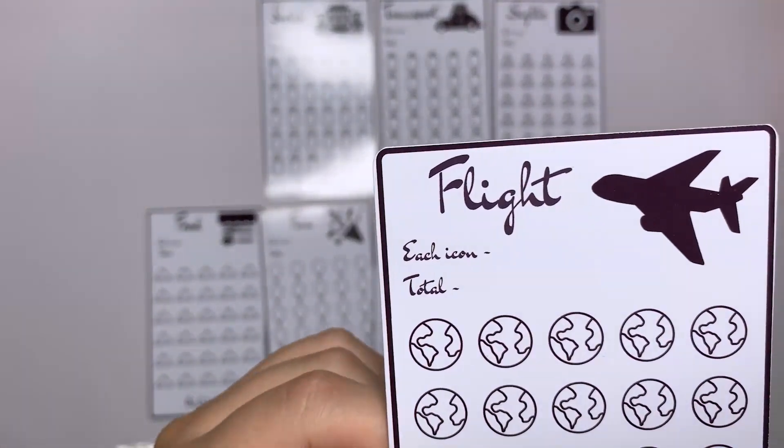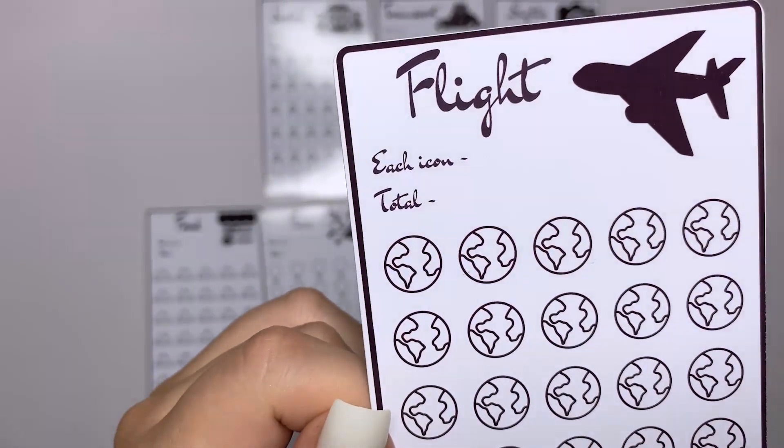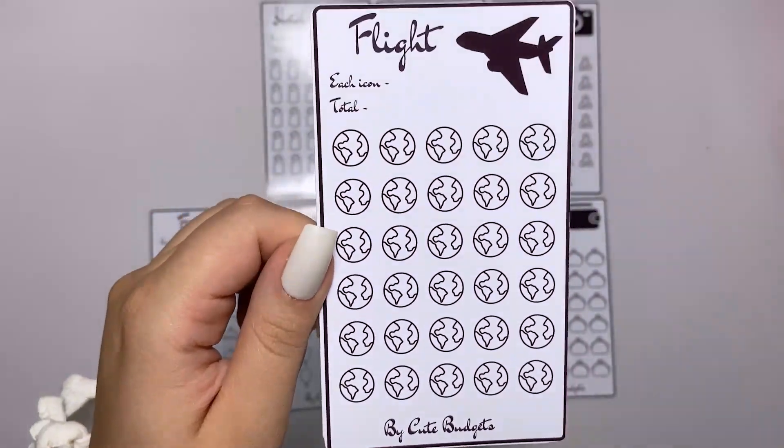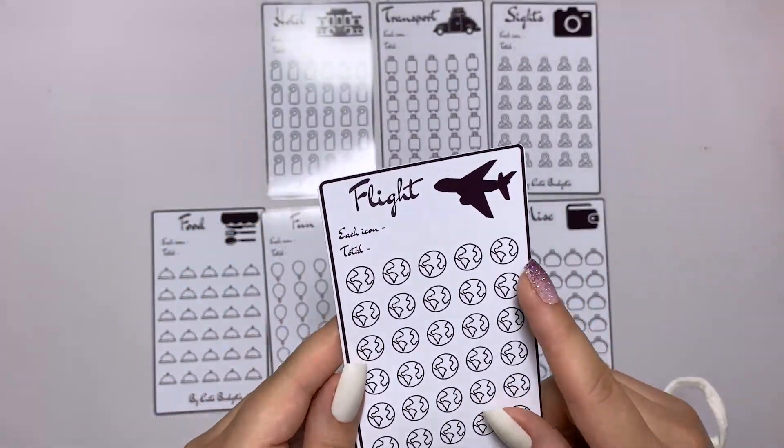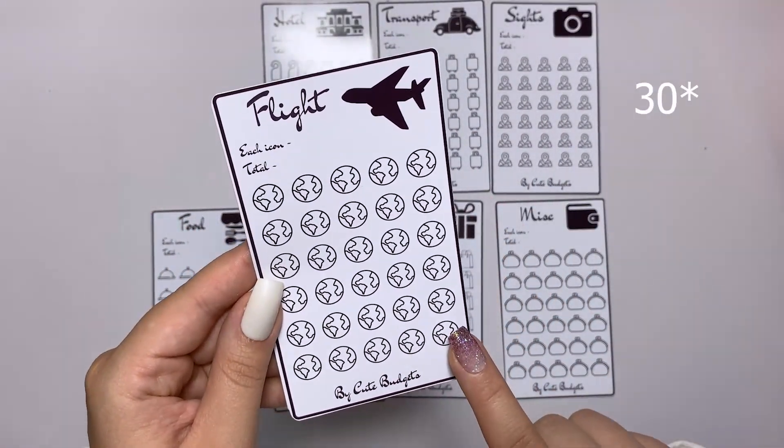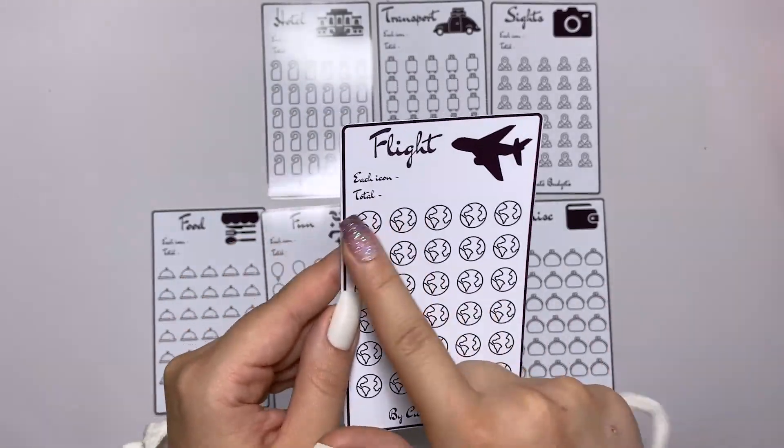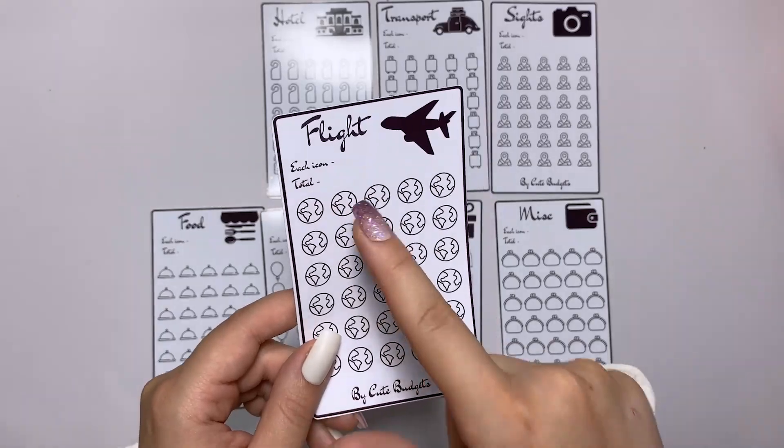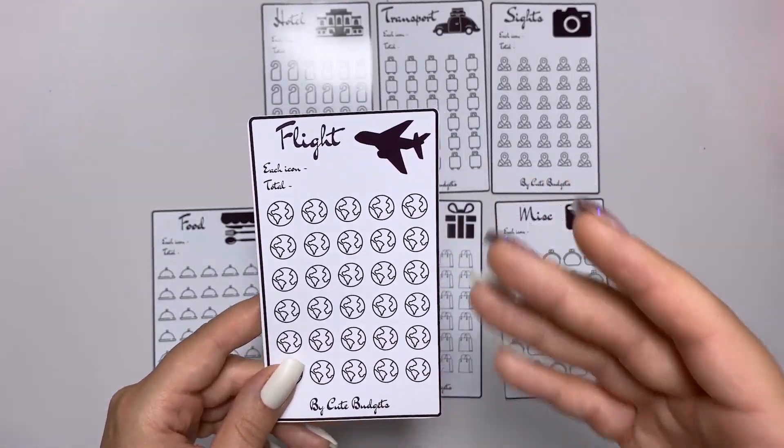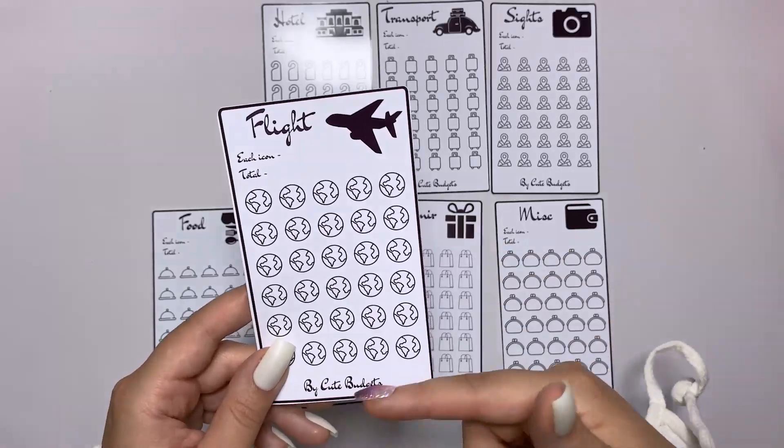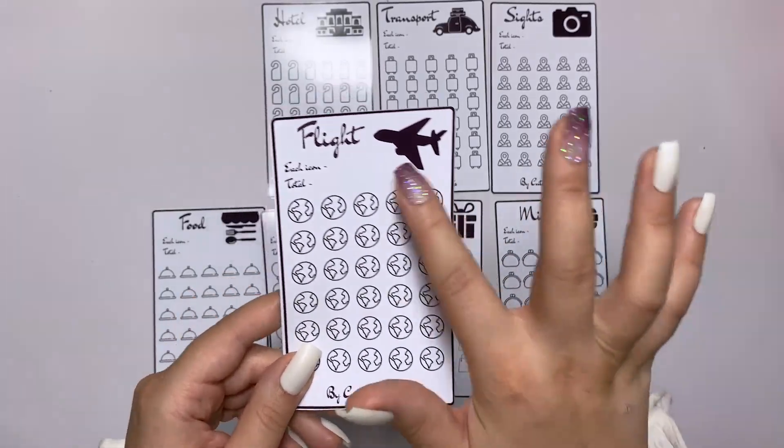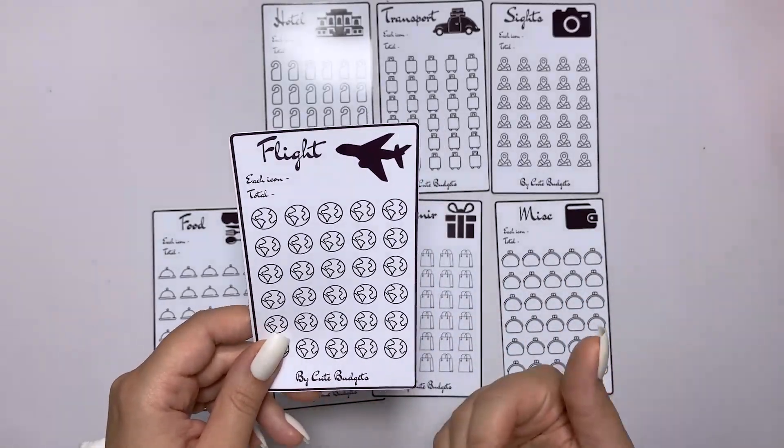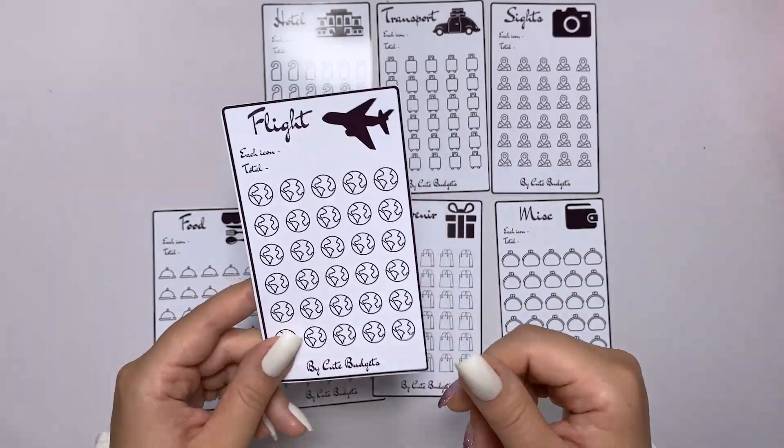Now let's start and let's see one by one what these challenges are about. First one is for flight. This is about how much you want to save for flight. Here we have 30 icons, so you can decide how much each icon equals. You will just calculate how much you need for flight, divide it into 30, and then write down how much you want each icon to equal.